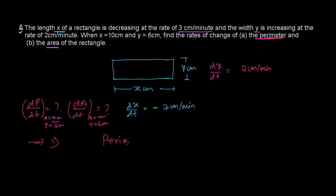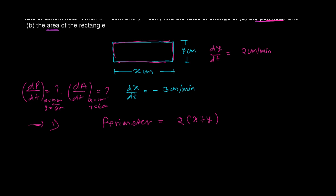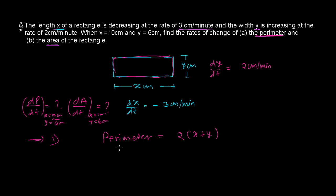The perimeter of a rectangle is given by twice of length plus breadth: P = 2(x + y). Let's differentiate both sides with respect to time. So dp over dt is going to be 2 times dx over dt plus dy over dt.